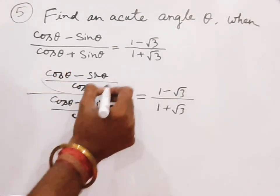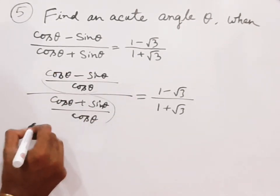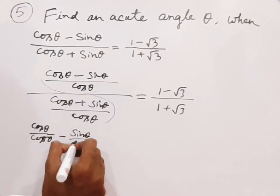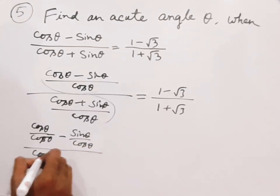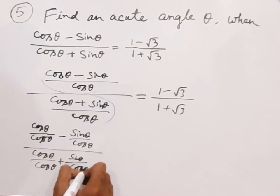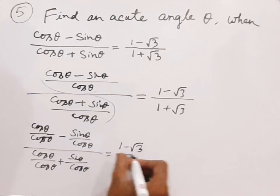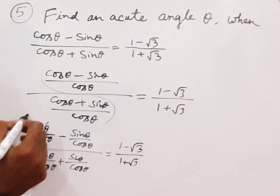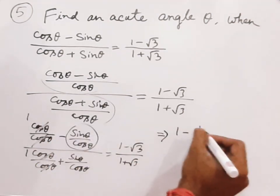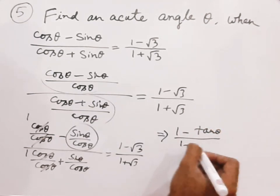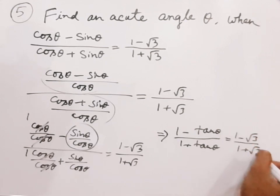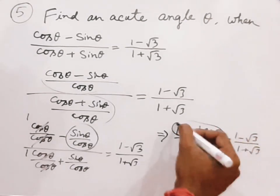Dividing through by cos θ, the numerator becomes 1 minus tan θ and the denominator becomes 1 plus tan θ, which equals (1 − √3) by (1 + √3). We can cancel cos θ terms on both sides so we get 1 on each side.